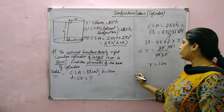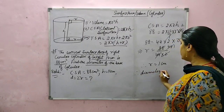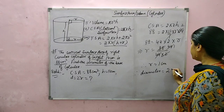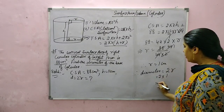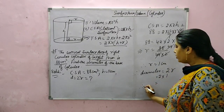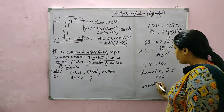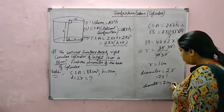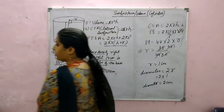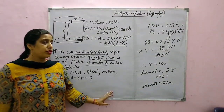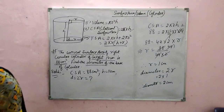Now we have to find the diameter. Diameter is 2 into R, which is 2 into 1. Therefore diameter equals 2 cm. Like these questions, we will do more questions based on curved surface area and total surface area.